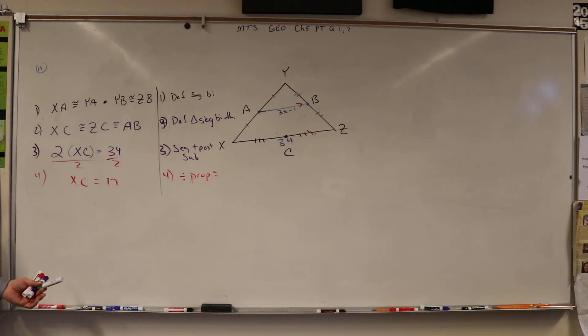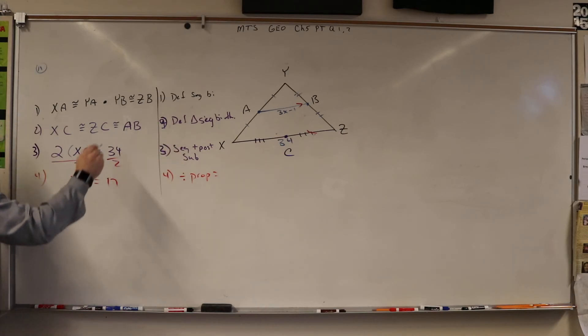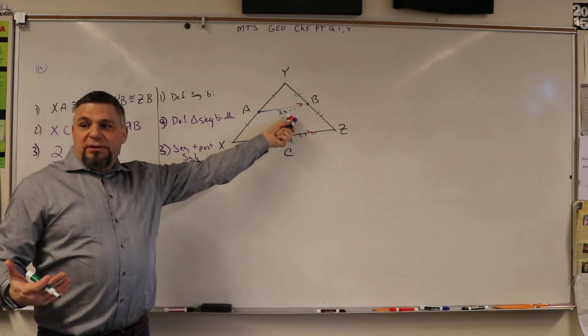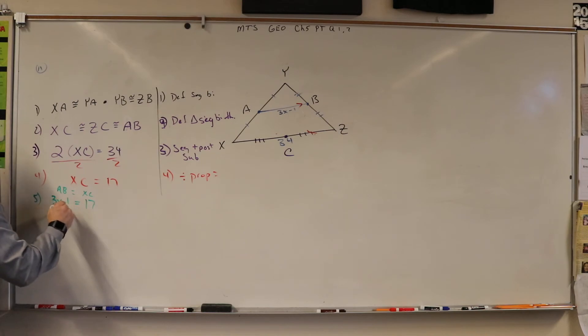Now we're going to substitute in. Now we know that AB is equal to 17, because AB equals these two. But what is AB? Instead of writing AB, we could write something else. We're saying AB is equal to XC. But in this case, XC is 17, and what's AB? 3x minus 1. So we're going to say 3x minus 1 equals 17.